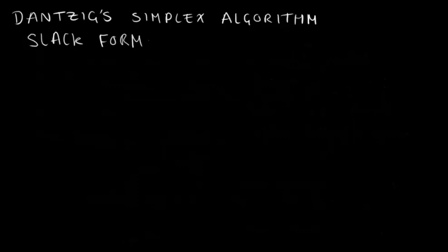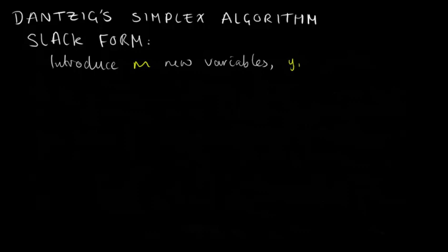So going back to slack form, we start by introducing m new variables, which I'm going to refer to collectively as the slack variables, and individually as y sub i. So each slack variable is associated with an inequality from the standard form, and this defines the difference between the two sides of said inequality.